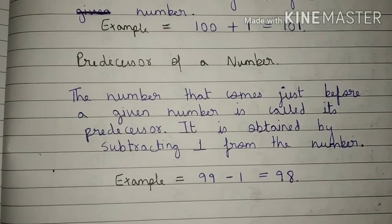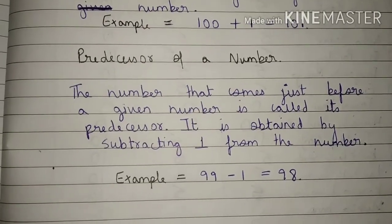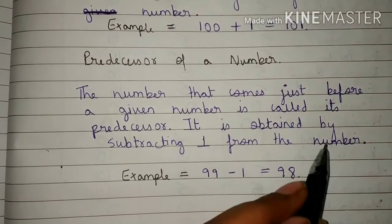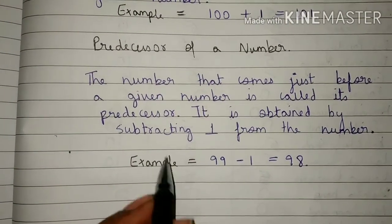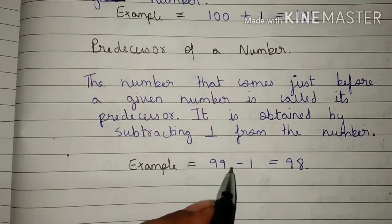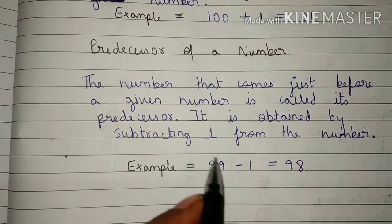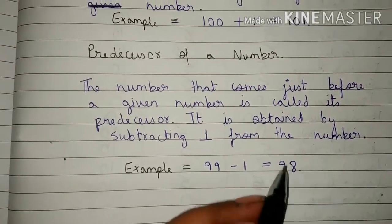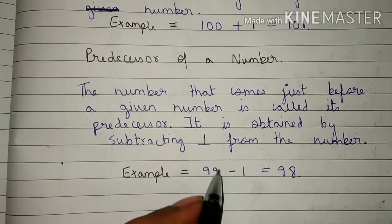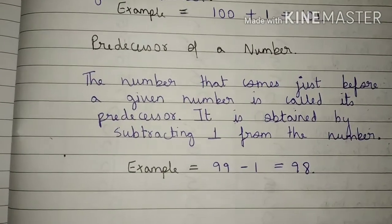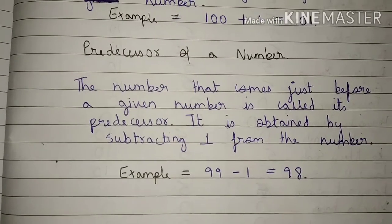If you have to find out the predecessor of any number, you will always subtract 1 from the number. For example, if you have to find the predecessor of 99, you will subtract 1 from 99. So 99 minus 1 is 98, and 98 is called the predecessor of 99. Always remember that for predecessor, you have to subtract 1 from the number.